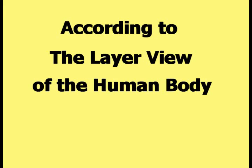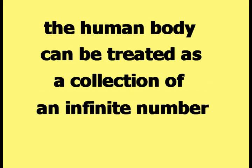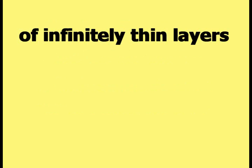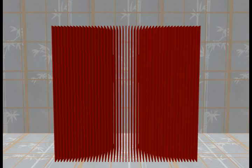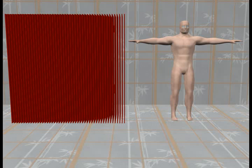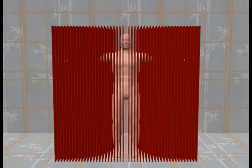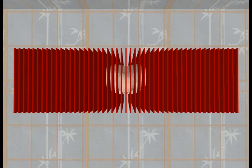A layer is an object that has a relatively large width and length with a relatively small height. According to the layer view of the human body, the human body can be treated as a collection of an infinite number of infinitely thin layers. This picture shows a rectangular grid of the layer objects. A human body is positioned next to the grid of layers, and then moved into the center of the grid. This overhead view of the two objects verifies that the human body is in the center of the grid of layers.